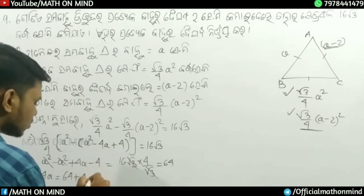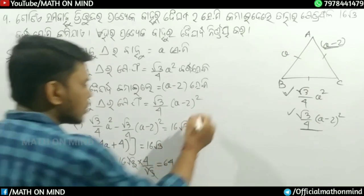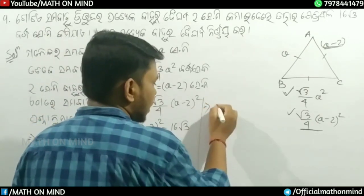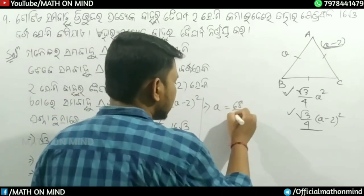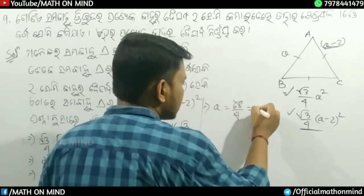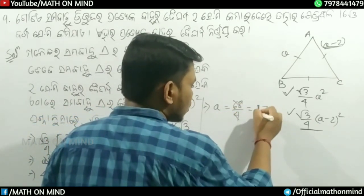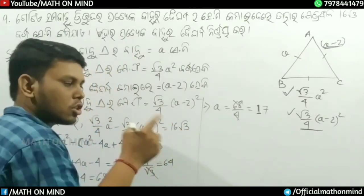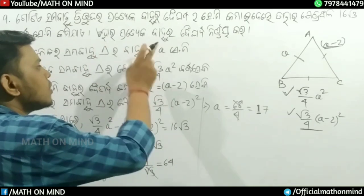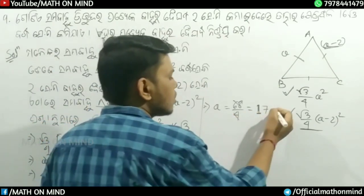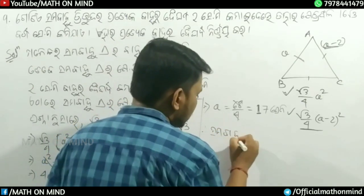So 4a equals 68. Dividing both sides by 4: a equals 68 divided by 4, which equals 17. Therefore a equals 17 centimeters. This is the answer for the first problem - the side length is 17 centimeters.